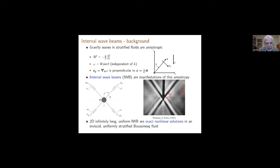This leads to this classical wave configuration where you shake a cylinder — extending perpendicularly to the screen — up and down. Instead of circular wavefronts, you generate four beams whose inclination is related to the driving frequency, which has to be less than the Brunt–Väisälä frequency N. This was noted long ago in a 1967 paper.